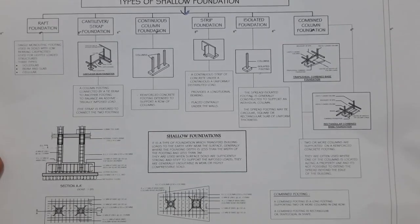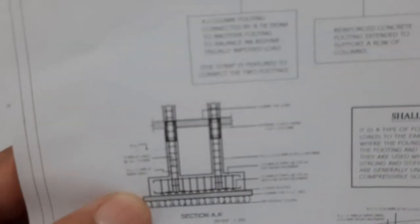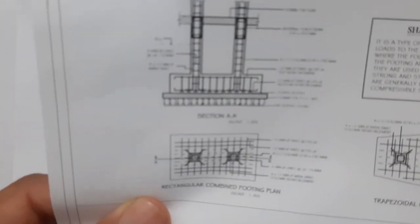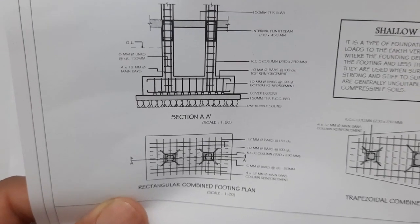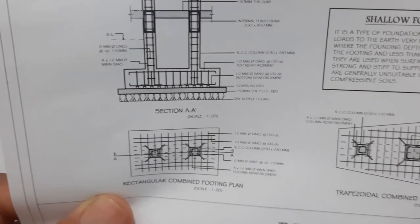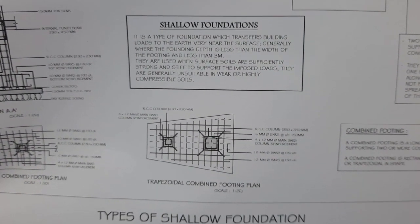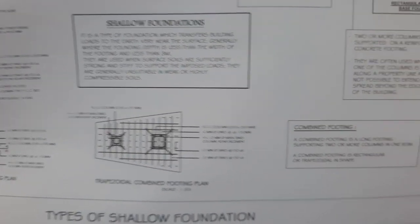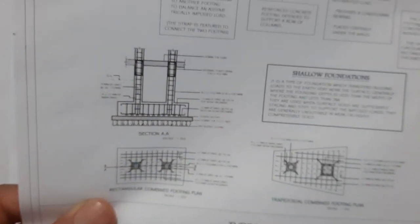As you can see, this is combined footing with all details shown. This is the section — rectangular combined footing plan you can see here. You can also see a trapezoidal combined footing. You can make a screenshot from this to capture the theory and all details shown clearly.